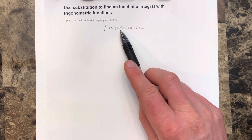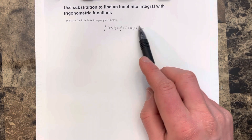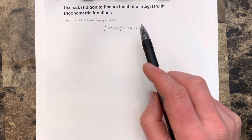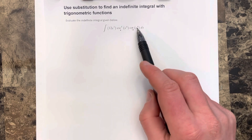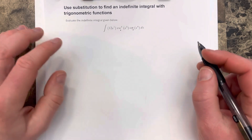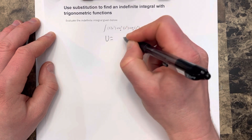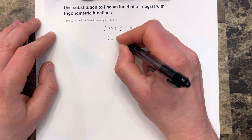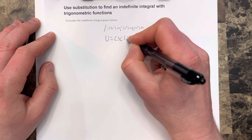Cosecant is the one I'm going to use, because if I use cotangent, I get negative cosecant squared. Negative cosecant squared is not going to cancel out cosecant to the fifth. But if I use cosecant, I will cancel that cotangent. So I'm going to say u is equal to cosecant of x to the fourth.